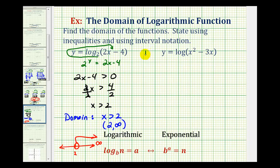Looking at our second example, notice how there's no base listed on this log. Therefore, we know it's common log or log base 10. If we focus on the number part of the log, the quantity x squared minus three x would be obtained by raising 10 to the power of y, which would always be greater than zero. Therefore, to find the domain of this function, we need to solve the inequality x squared minus three x greater than zero. The solutions to this will be the domain of our function.